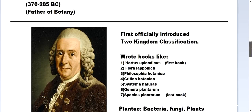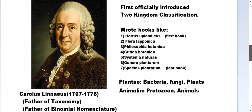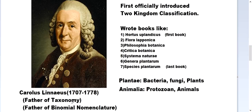Linnaeus, holding the titles of father of taxonomy and father of binomial nomenclature, first officially introduced the two kingdom classification. People already knew about plants and animals and had attempted classification. Linnaeus then formally divided organisms into Plantae and Animalia and further classified plants and animals according to his system.